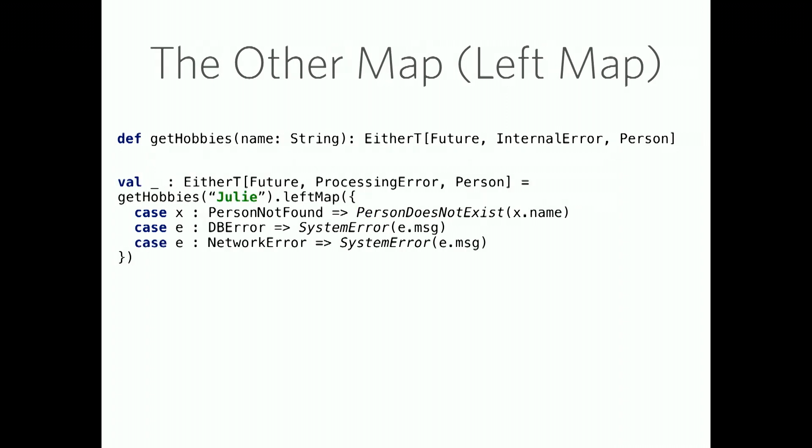So now some functions. The other map, aka the left map. Just like you converted an exception into an either, sometimes you have to convert an either from one type to another. So for example, we have here an either T that has a left of an internal error. Maybe I want that left to be a processing error. You know about map already, but you can use left map to change the left side. This might be if you're moving from one part of your program to another part of your program which uses a different error scheme. Basically, this just lets you map over that left side and process it or change it from one type to another.